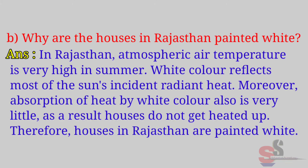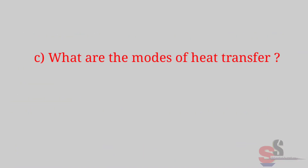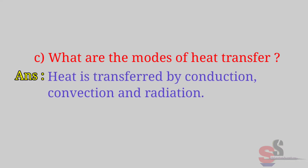(b) Why are the houses in Rajasthan painted white? Answer: In Rajasthan, atmospheric air temperature is very high in summer. White color reflects most of the sun's incident radiant heat. Moreover, absorption of heat by white color is very little. As a result, houses do not get heated up; therefore houses in Rajasthan are painted white.